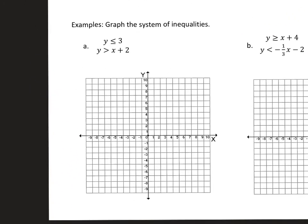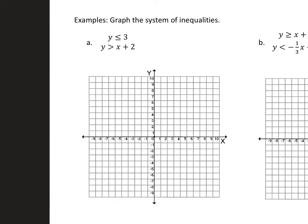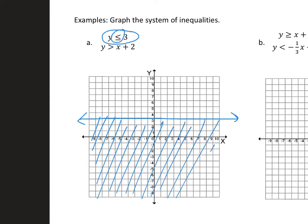For the first graphing example, both inequalities are already solved for y, which makes it much easier. The first is a horizontal line — it's a solid line because it uses 'equal to' — and it's less than or equal to, so I shade under the line. The second one is y greater than x plus 2, so I start at 2, the slope is 1, and I plot points going down one, left one repeatedly. This line is dashed.